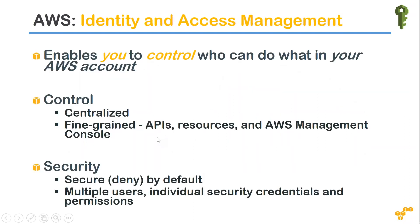What IAM allows you to do is enable you as a user or consumer to control who can do what in your account. For example, as an AWS admin, you can decide whether your database administrators can access your application servers or not. You can have very centralized control or very fine-grained controls — broadly saying all people have access to all resources, or something like a person from India cannot access your production machine sitting in the US Virginia region.